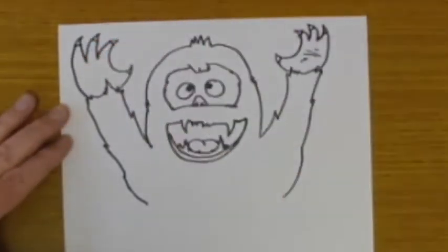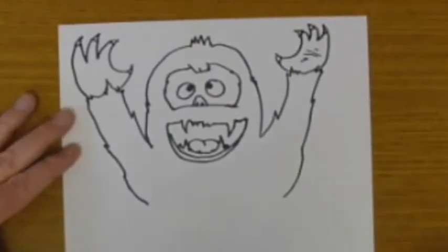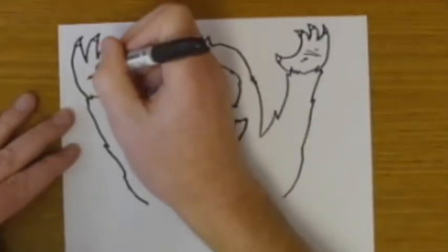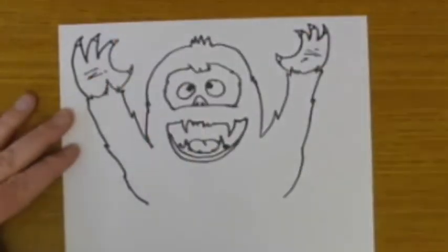Finish off the hand, and then a few more lines in the palm, makes it look a little bit more like a hand or a claw.